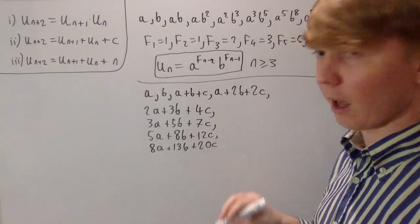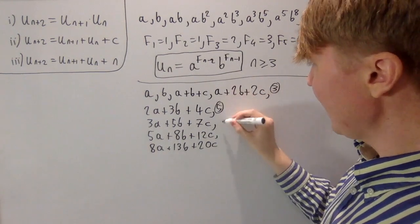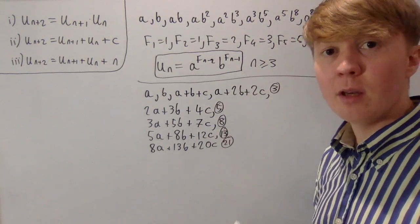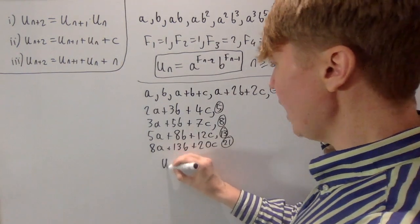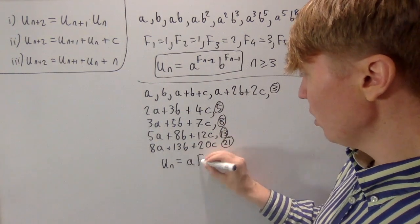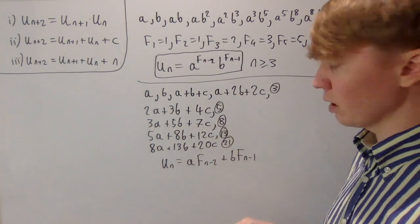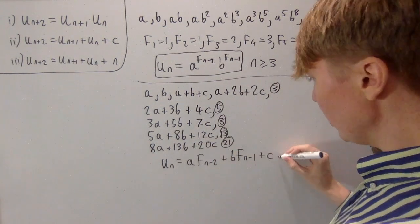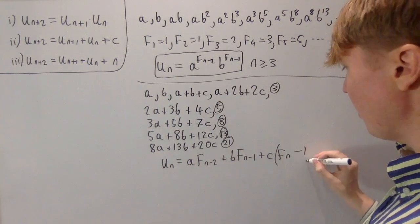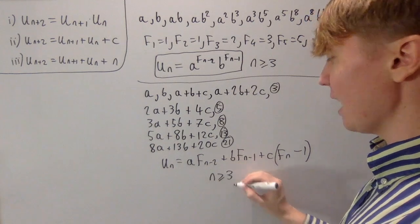Looking at the coefficients of c — 3, 5, 8, 13, 21 — these are all Fibonacci numbers minus 1. So the pattern for the nth term is: a times f_{n-2} plus b times f_{n-1}, and c is being multiplied by f_n minus 1, i.e., the same Fibonacci number but with 1 subtracted to give our coefficient of c. This works for all n greater than or equal to 3.